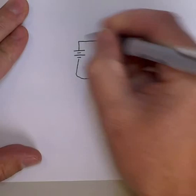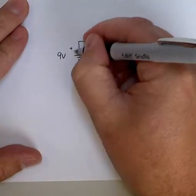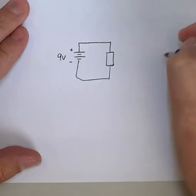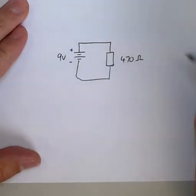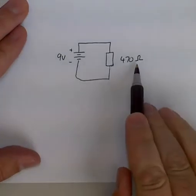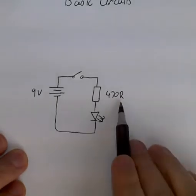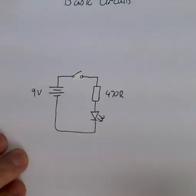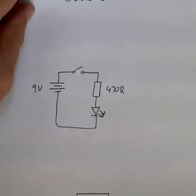We've got 9 volts. Now I'm going to label the terminals positive and negative. And a 470 ohm resistor again. So you'll notice here I've used the symbol omega to represent ohms. And up here I used R. Either of those is fine. R is usually easier because it's easier to type into a computer.